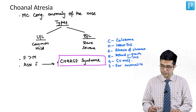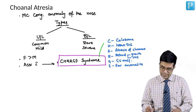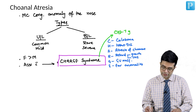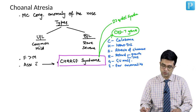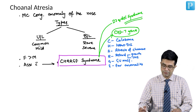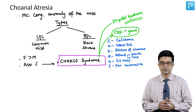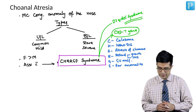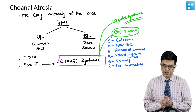Many patients of CHARGE syndrome show autosomal dominant inheritance and may have abnormalities in the CHD7 gene. CHARGE syndrome is also associated with 22q deletion syndrome, which is DiGeorge syndrome. These are cross-associations which can be asked in entrance exams. The most common syndromic association with choanal atresia is CHARGE syndrome.